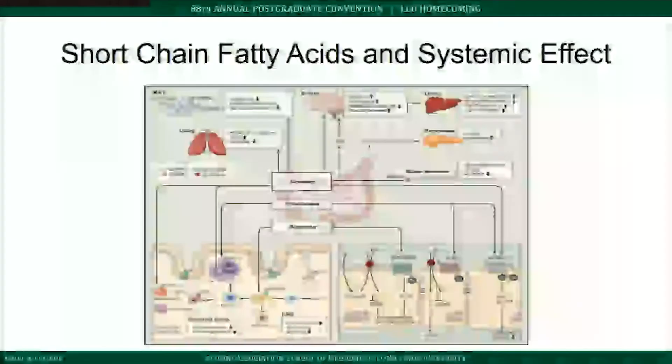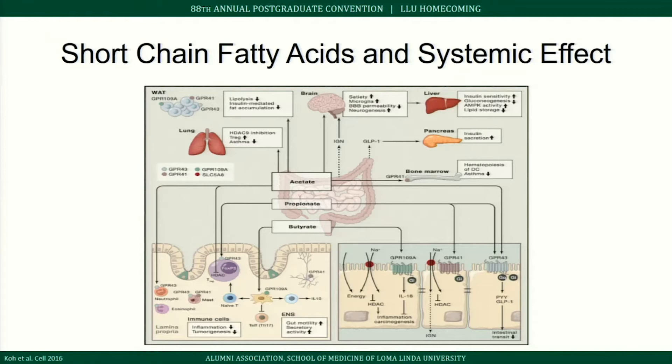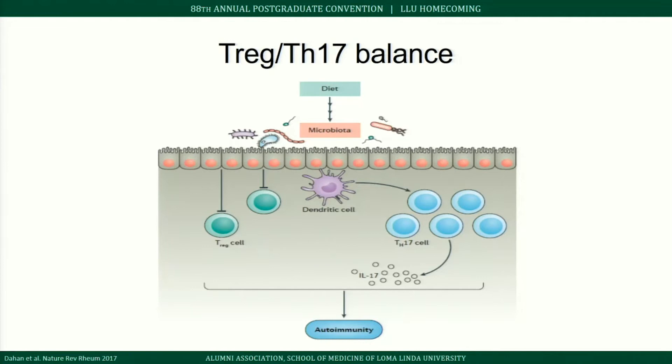Short-chain fatty acids have effects not only at the gut but systemically — affecting the lungs, fat cells, brain, liver, pancreas, and bone marrow. At the gut level, eating a highly inflammatory westernized diet communicates with the gut microbiome, and if you have a genetic predisposition, this can induce autoimmunity through the T helper 17 pathway — the pro-inflammatory T cell pathway.